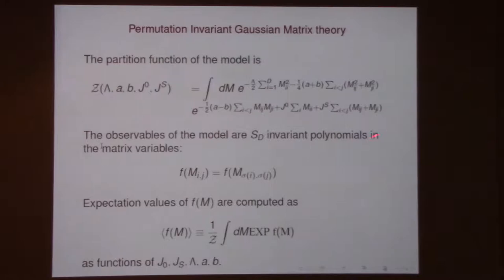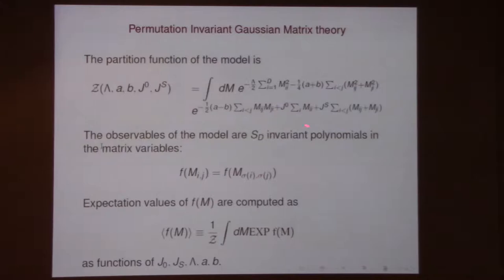We go back to the simplest models we can think of. You have to think about matrix models where you have the usual measure dm over all matrix elements. There are two kinds of linear invariants: whereas for U(N)-invariant things you just have trace M, here you have two linear invariants. You can take the sum of all the diagonal elements — which is trace M — but if you just take the sum of all the off-diagonal elements, that is also permutation invariant.